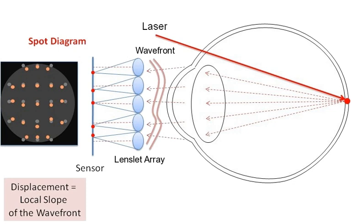In the late 1960s, Roland Shack and Ben Platt modified the Hartmann screen by replacing the apertures in an opaque screen with an array of lenslets.